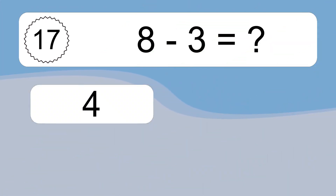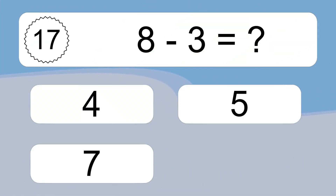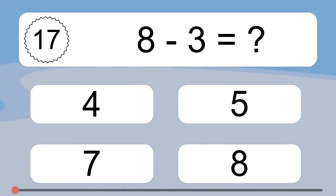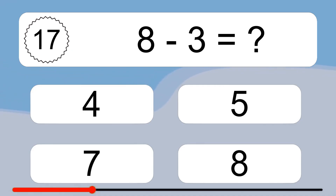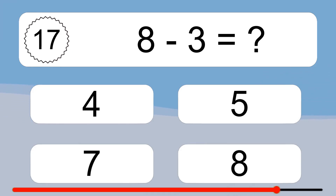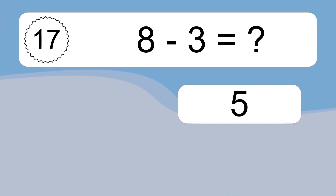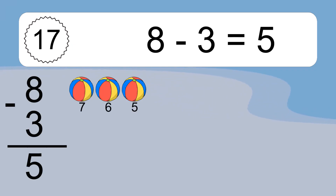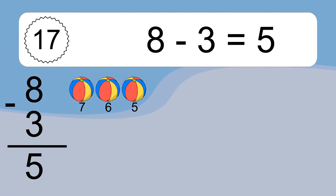8 minus 3 equals what? 8 minus 3 equals 5. Let's count it: 7, 6, 5.